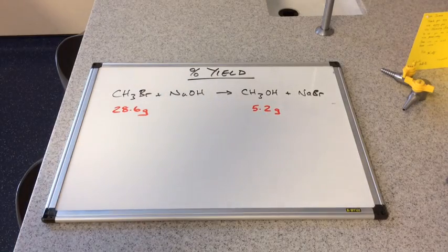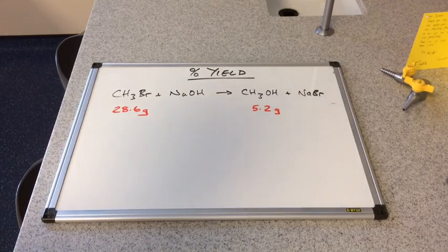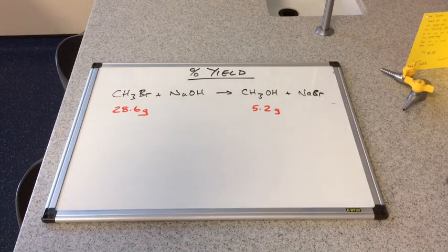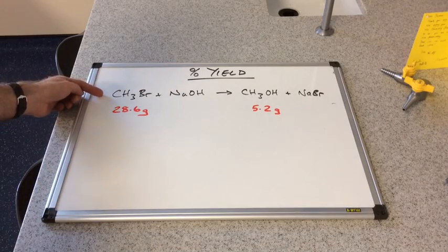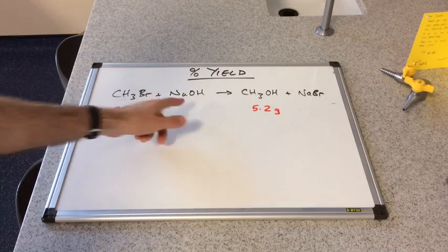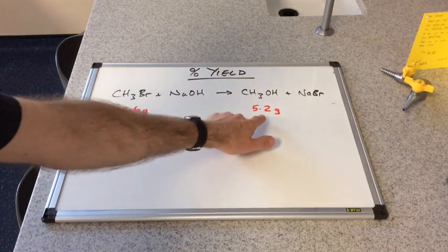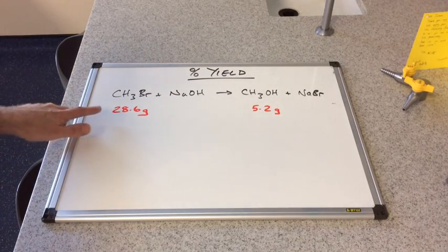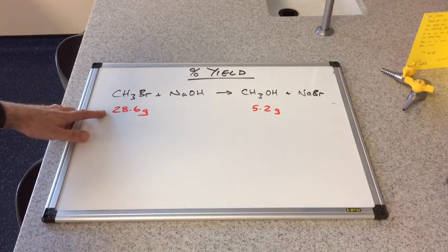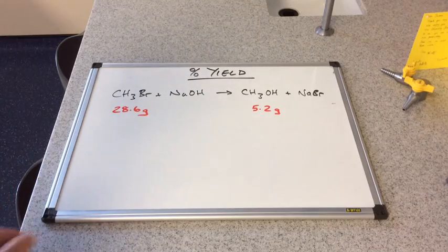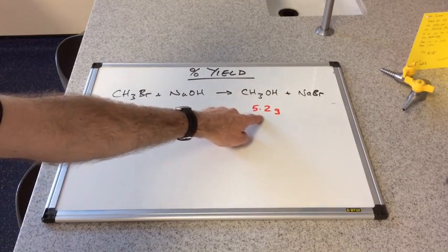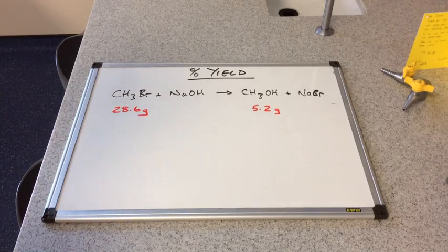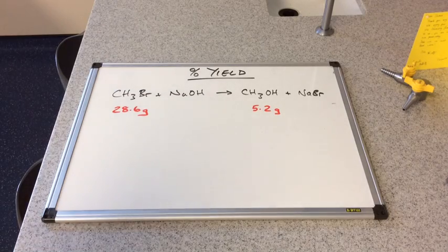We'll do one more. I'll just pause the question, and if you want to pause the video, have a go and see if you get it right. We've got the reaction between bromomethane and sodium hydroxide, producing methanol and sodium bromide. Let's suppose we started out with 28.6 grams of bromomethane and 5.2 grams of methanol were produced. A typical question would be: calculate the percentage yield for this reaction.